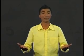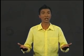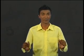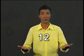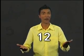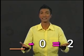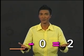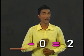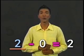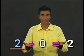Let's start by finding pairs of numbers where the difference is the same. We'll look for all pairs up to 12 where the difference is 2. First, what number minus 0 will give us 2? Since 0 is nothing, 2 minus 0 equals 2.